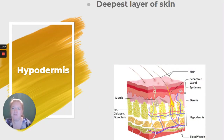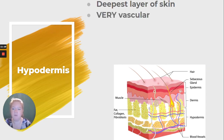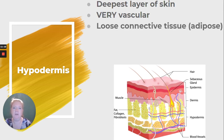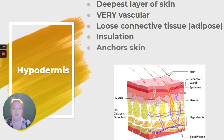The hypodermis is the deepest layer of skin. It's very vascular, meaning lots of blood supply. It's loose connective tissue, primarily adipose tissue. It provides insulation and anchors our skin.